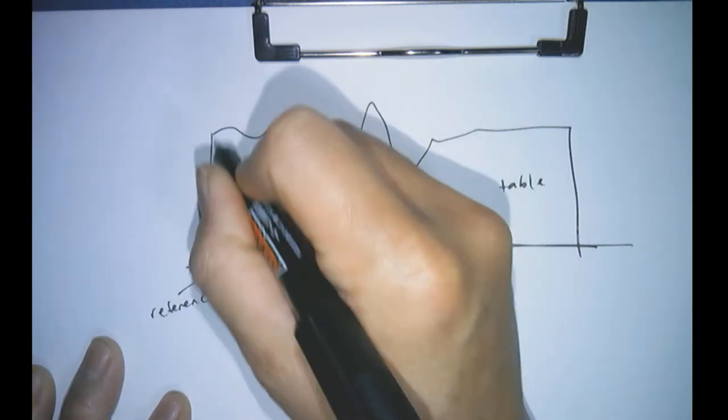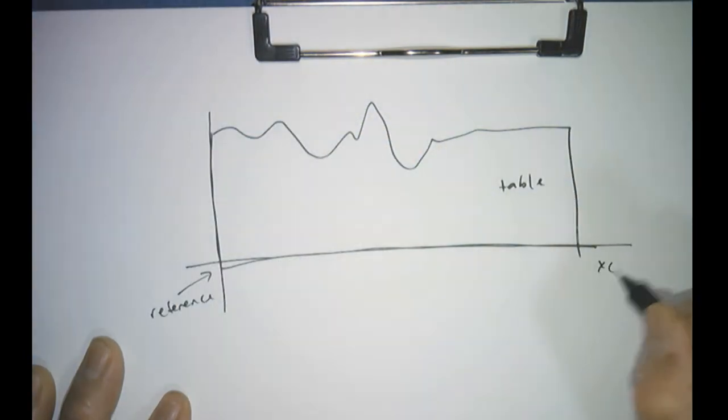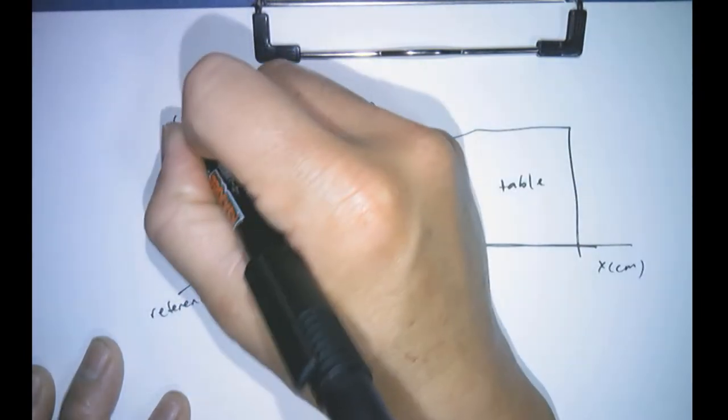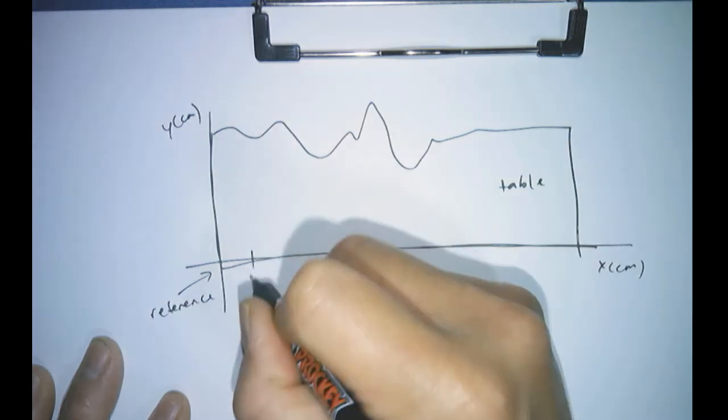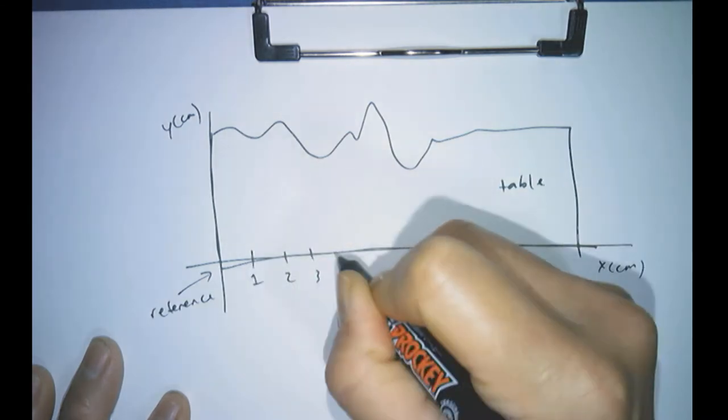I'm just going to draw some axes to make things easier. These are my x-axes and y-axes, and these are in centimeters. And then I'm going to draw out my sampling points, which will be at 1 centimeter, 2 centimeters, 3 centimeters, etc.